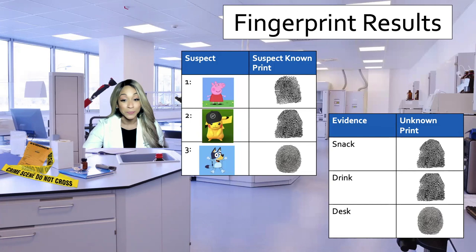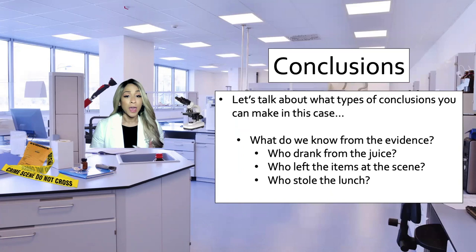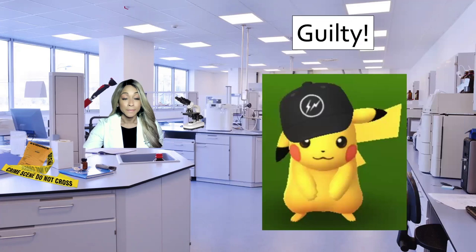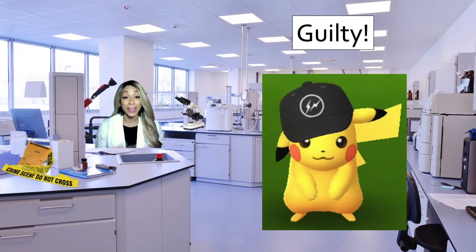After we've had these discussions about the evidence results, we talk about our conclusions. What do we know about the evidence? Who drank the juice? Who left the items behind at the scene? And can we figure out who stole the lunch? This also leads to a discussion that you may find evidence at a crime scene that is not related to someone who actually committed the crime. You have to think about whether it makes sense. In this case, Pikachu ends up being the guilty one. I also remind them that while this was fun, forensic scientists generally do not have any involvement in deciding whether someone is innocent or guilty — we just do the work on the evidence and submit that to the investigators.